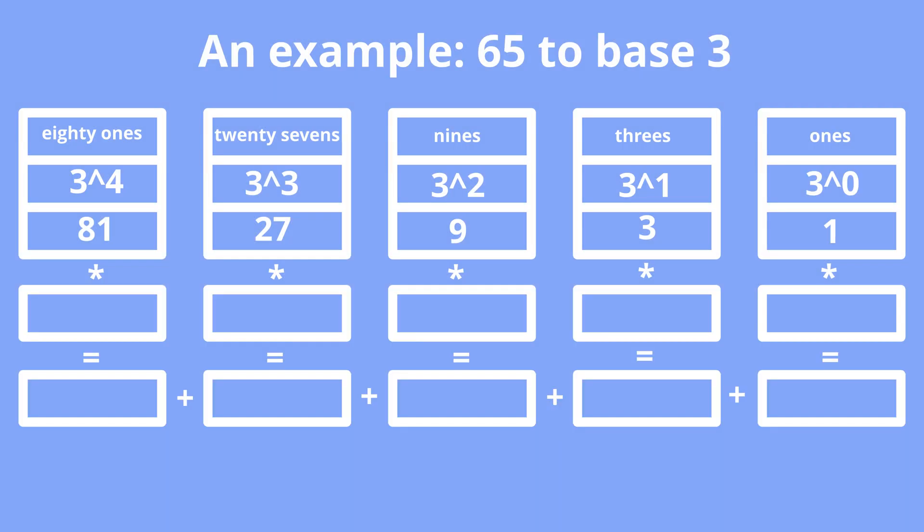As the starting position, we will take the position of 27, because the weight of the next to the left position of 81 is too great. So 65 equals... Let's put digit 2 in the 27s position. 27 times 2 equals 54. 54 is less than 65, so we can continue.